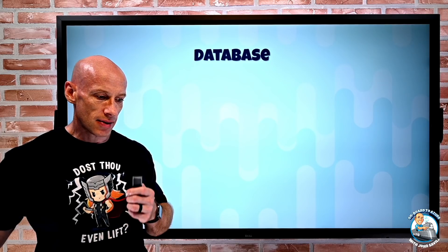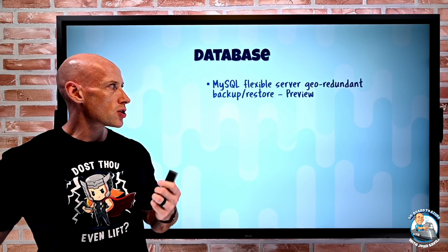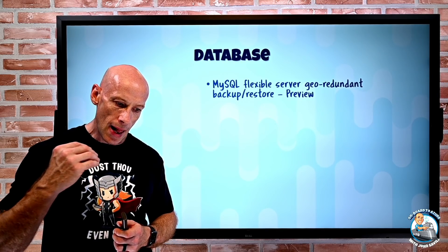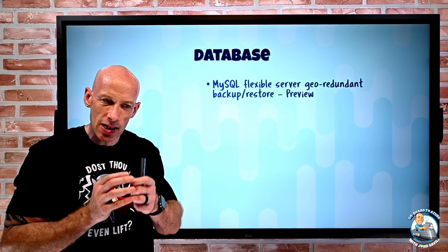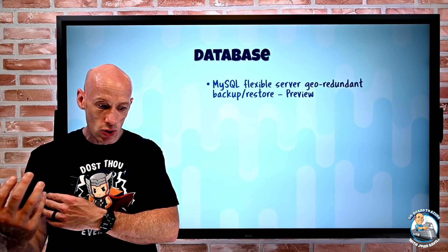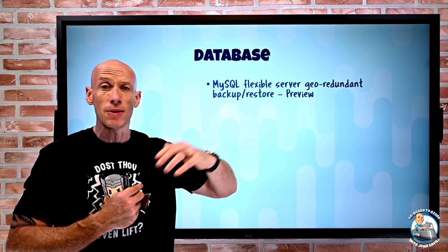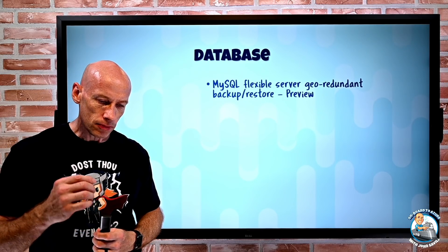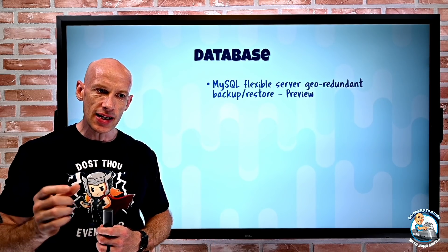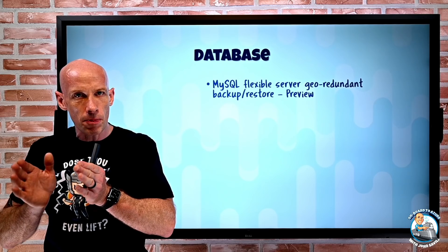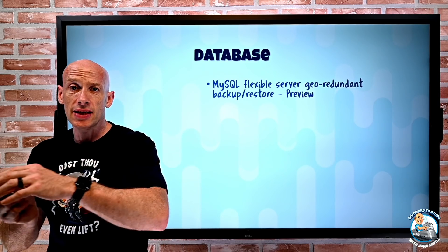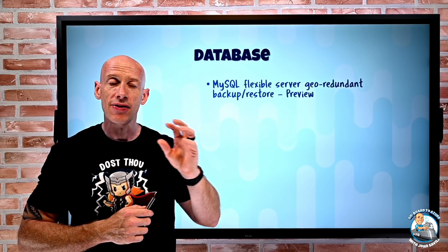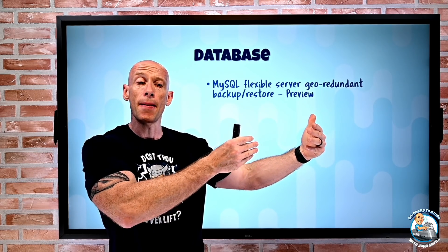On the database side, quite a lot of updates. MySQL Flexible Server — which is the new version of managed databases built on virtual machines instead of containers, with start/stop capability, burstable SKU support, optional automatic HA, and availability zone support — now has geo-redundant backup restore. Instead of using the default LRS storage with three copies within a region, you can now have GRS, which asynchronously copies to the paired region. You can then actually restore there if there's a regional-level disaster.